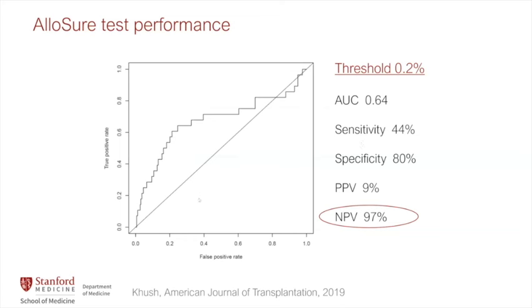Overall test performance of AlloSure from the DTRT registry: at a threshold of 0.2%, the area under the curve was 0.64, with high specificity and a negative predictive value of 97%. If a patient's non-invasive screening test falls below this threshold, you can be 97% confident they don't have acute rejection — the basis for how we use it at Stanford and across the U.S. About 90% of heart transplant centers in the U.S. now use cell-free DNA assays for patient monitoring. At Stanford, we do only two routine biopsies within the first month, then switch to non-invasive screening.